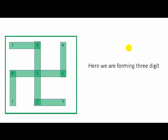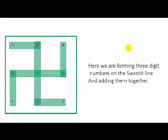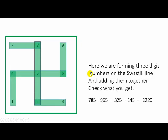Here, we are forming three digit numbers on the swastik line and adding them together. So, it will be like this 785, 965, 145, 325 and I add them together and just see what answer we get. It will be 2220.